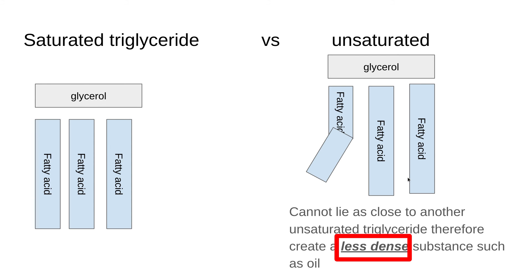In a saturated triglyceride, the glycerol is bound to the fatty acids using three ester bonds. In an unsaturated fatty acid, the glycerol is bound to fatty acids that have a kink in the chain — wherever there is a double carbon-carbon bond, it creates a kink and causes the fatty acid chains to bend. This means that unsaturated fatty acids can't lie as close to each other, and therefore create a less dense substance such as oil. Saturated fatty acids create more solid fatty substances such as lard and margarine, whereas unsaturated fatty acids with kinks create oils.